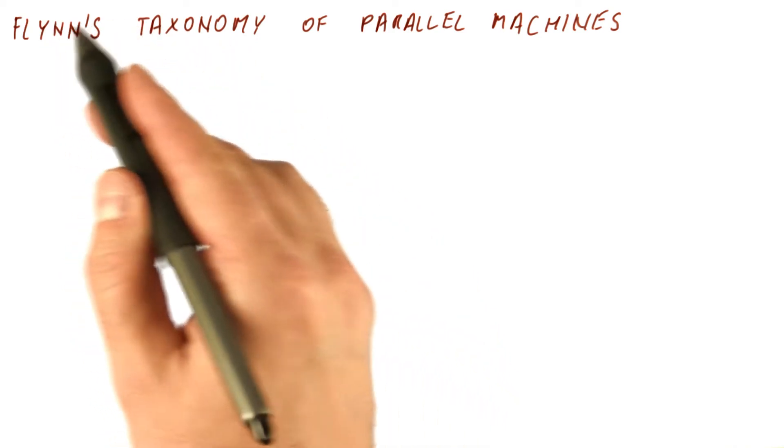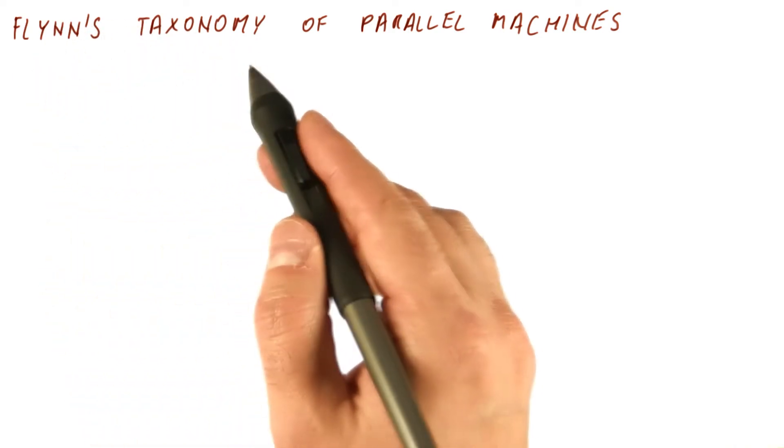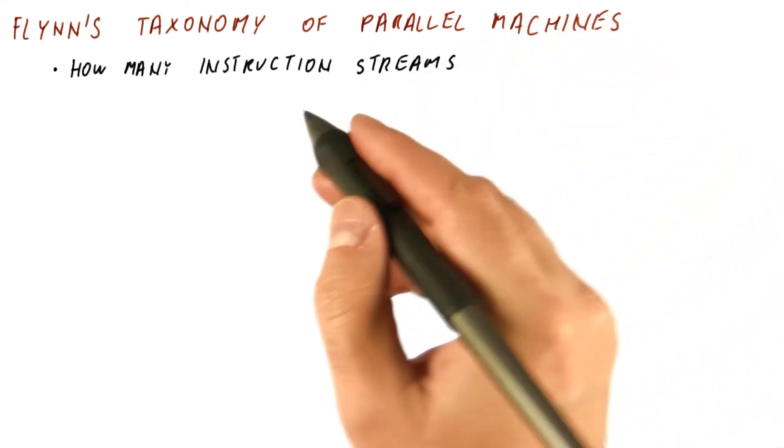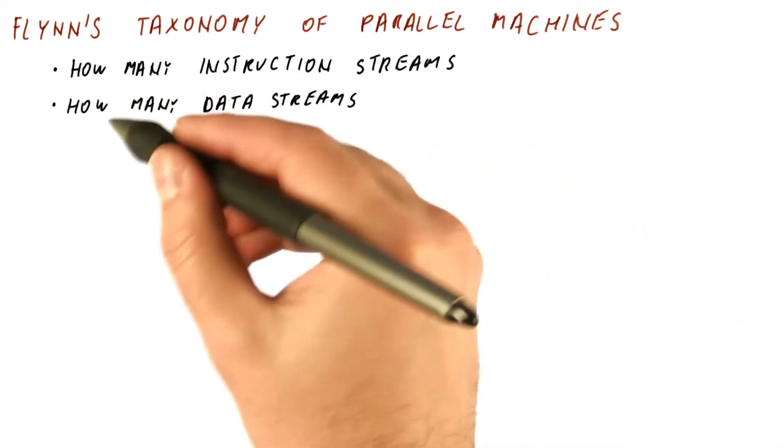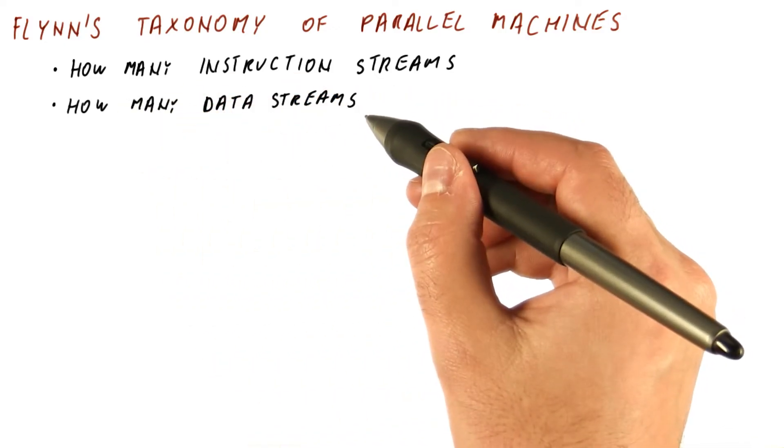There is a taxonomy called Flynn's Taxonomy of parallel machines. It distinguishes parallel machines according to how many instruction streams they have and how many data streams these instructions operate on.